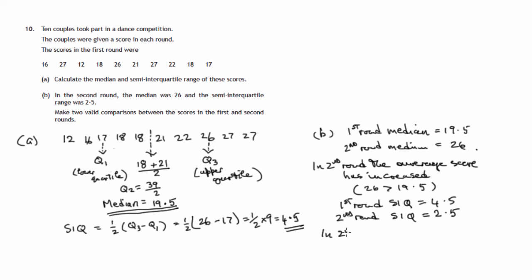So in the second round, the scores are more consistent. There's less extreme values there. They're more consistent. And the reasoning is that 2.5 is less than 4.5 in this case. So there's our two statements.